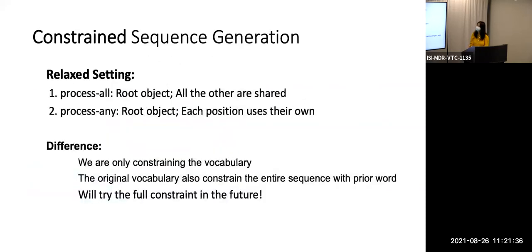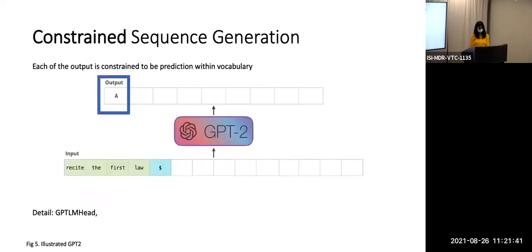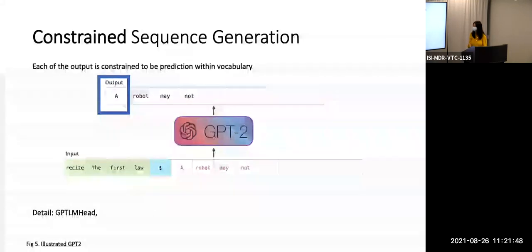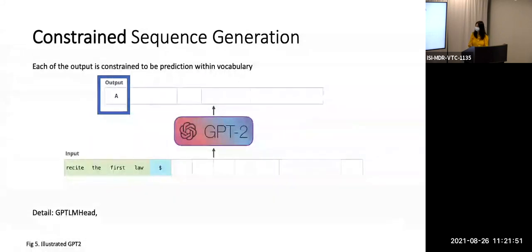Those are basically our two vocabulary settings. As an illustration, the original GPT-2 can arbitrarily generate anything in its vocabulary, but in our case each of the steps is constrained to predict only within the defined vocabulary.